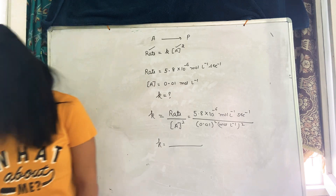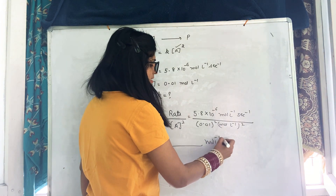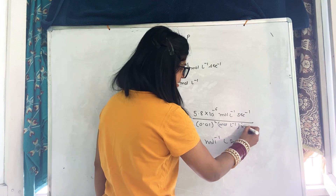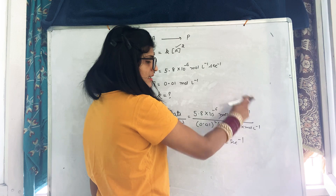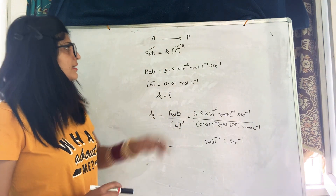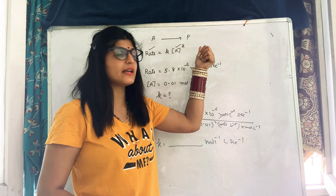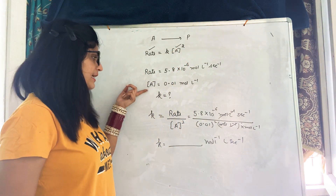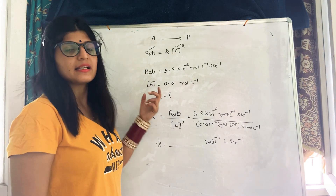The rate constant unit is mole inverse, liter, second inverse. This is the unit for a second order reaction. Rate value divided by concentration of reactant squared gives us k. I hope the concept is clear — rate, k, and concentration of reactant all accounted for.